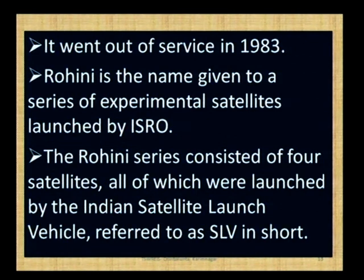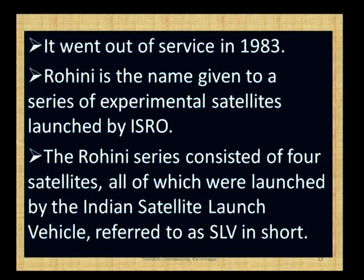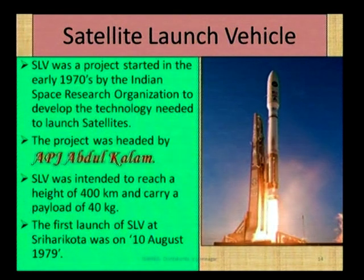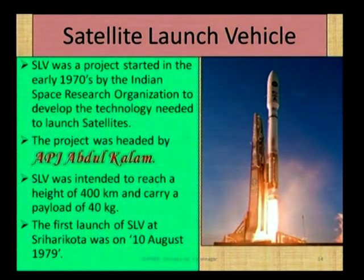APPLE — Ariane Passenger Payload Experiment — was a satellite launched by India on June 19th 1981. Ariane was the name of the rocket that launched the satellite. It conducted several experiments related to communication, including transmission of television programs and radio networking. APPLE went out of service in the year 1983. Next one is Rohini — a name given to a series of experimental satellites launched by ISRO. The Rohini series consisted of four satellites, all launched by the Indian Launch Vehicle referred to as SLV — Satellite Launch Vehicle.